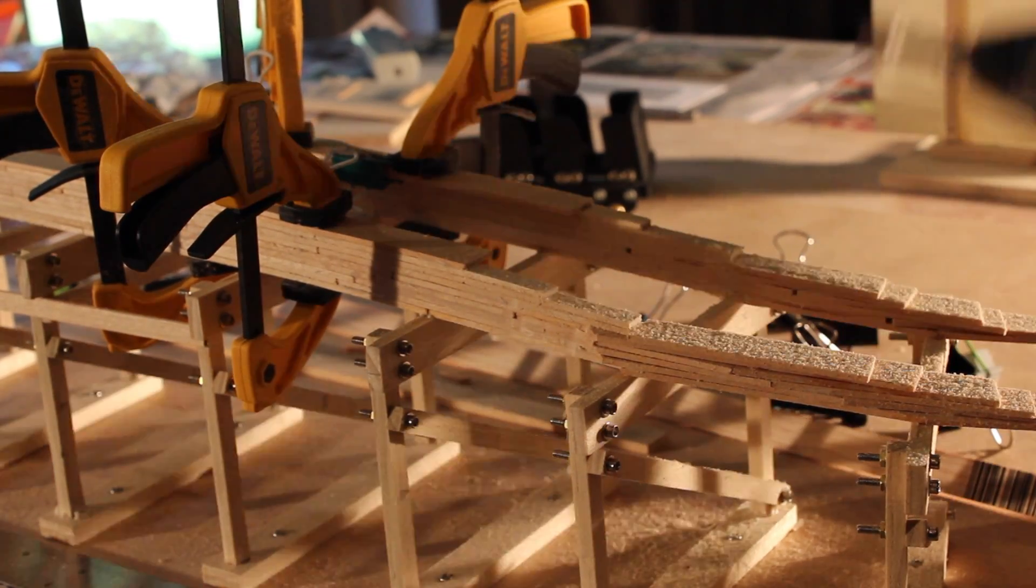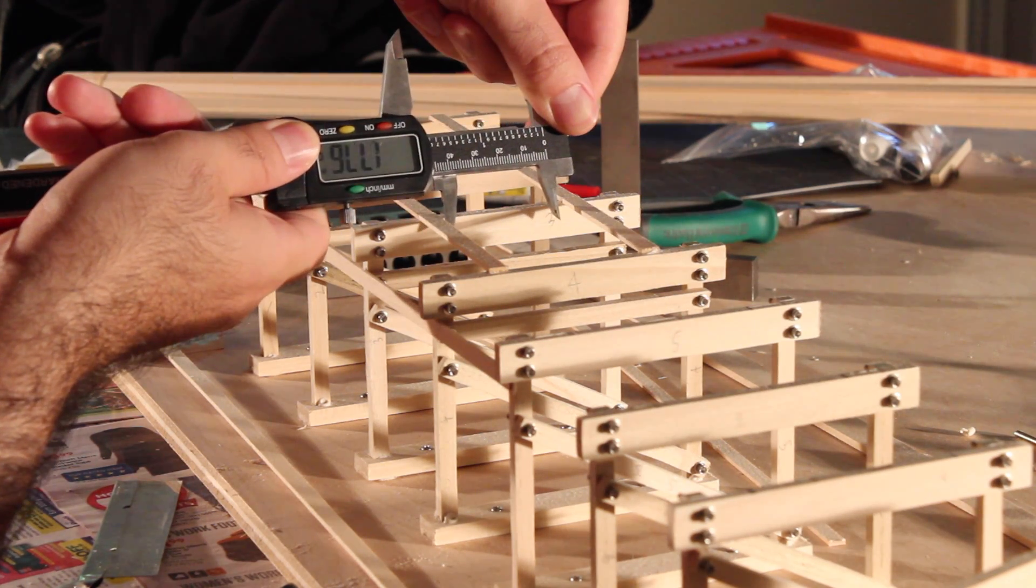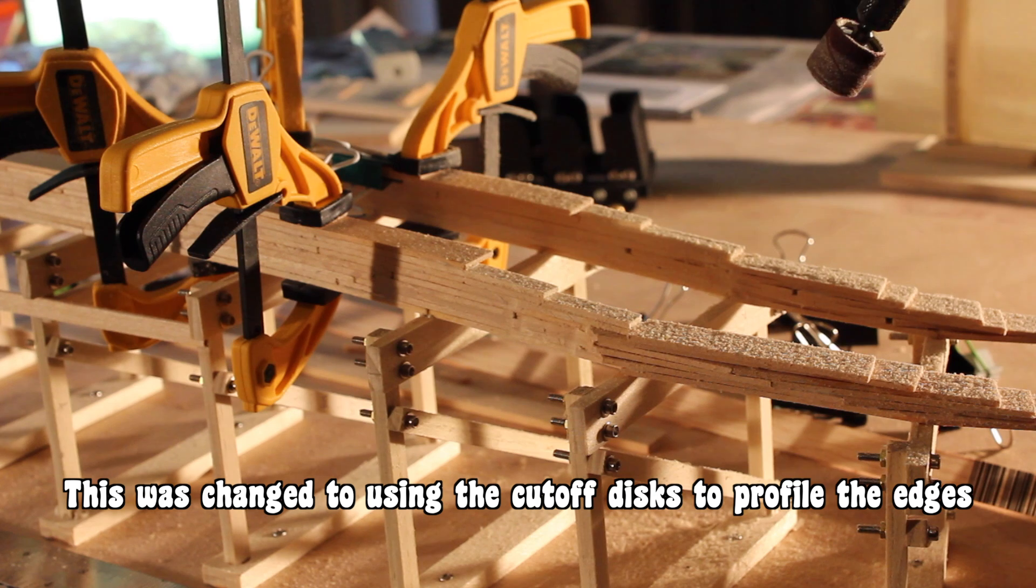And then what I did to finish up, once you get it relatively close based on where the center line is going to be on the ride, this is all marked out on the supports, what I did was I followed along with the Dremel tool and then I checked the gauge and I sanded the edges to make sure that they're nice and uniform and smooth.